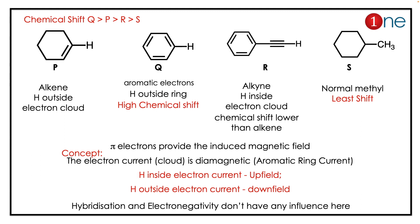The proton NMR chemical shift order is Q > P > R > S — Q has the highest and S has the least. To analyze this, you have to find whether the electrons are inside the ring current or outside the ring current. Most of the time, double bonds have a diamagnetic ring current. Protons inside the diamagnetic ring current always have a lower chemical shift than protons outside the ring current. Q's protons are outside the ring current, giving the highest chemical shift around 7 ppm. Next comes P, then R, and the least is S due to sp3 hybridization. So the order is Q > P > R > S.